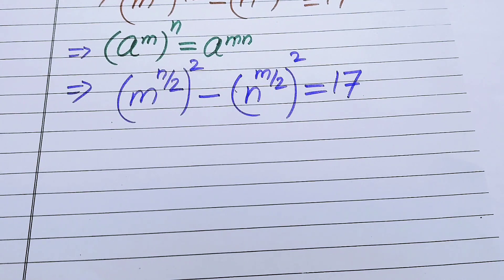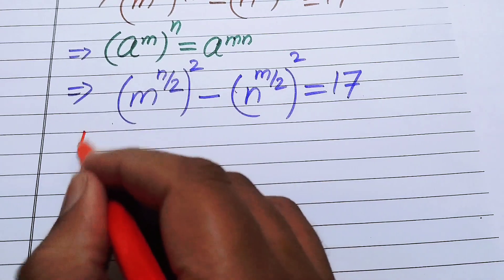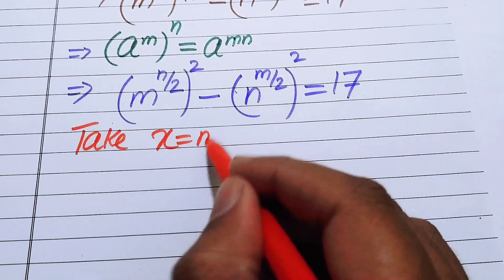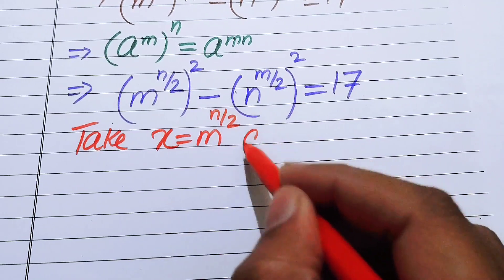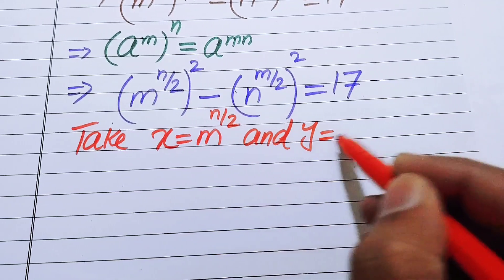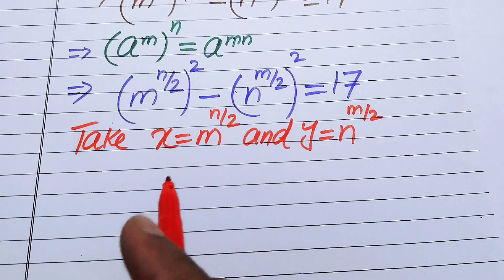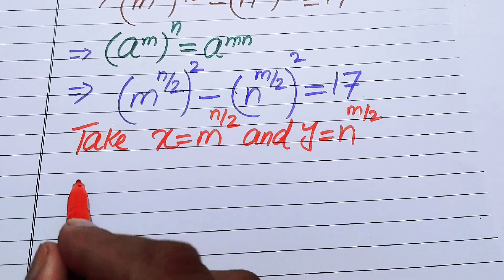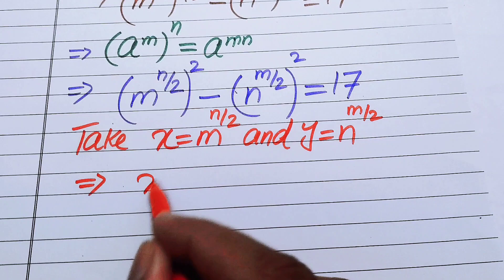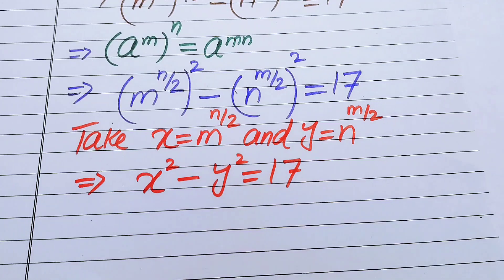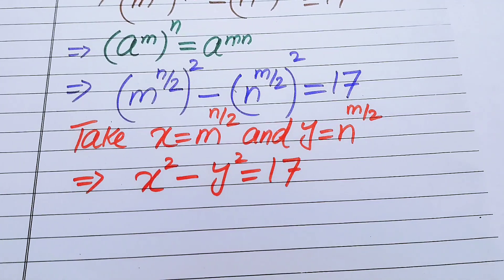In the next step we convert this exponential equation into simplified form. We let x equal m to the power of n over 2, and we let y equal n to the power of m over 2. Making these two substitutions, we get x squared minus y squared equals 17.